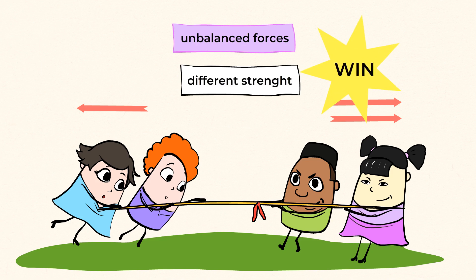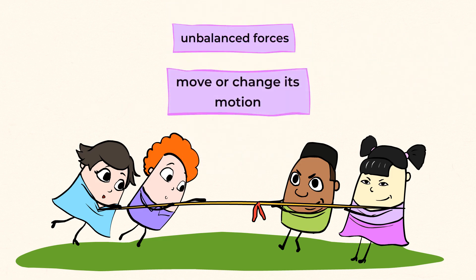Because of that, the rope starts moving. And one of the teams wins by pulling it towards themselves with greater strength than the other team. Which means that unbalanced forces can cause an object to move or change its motion.